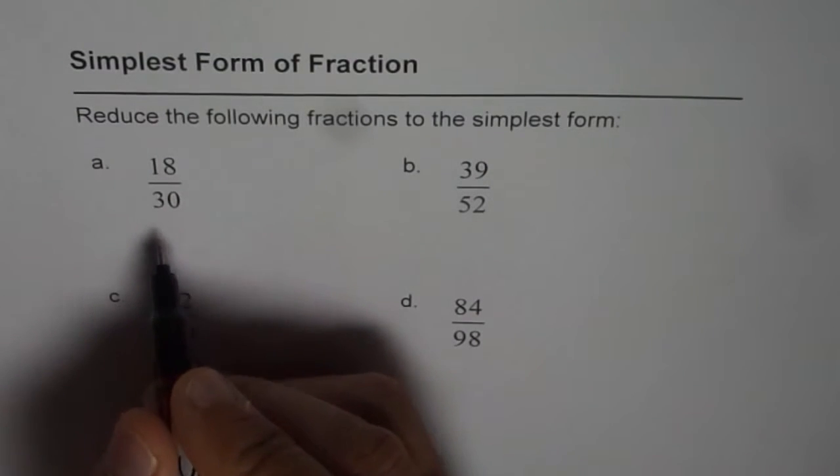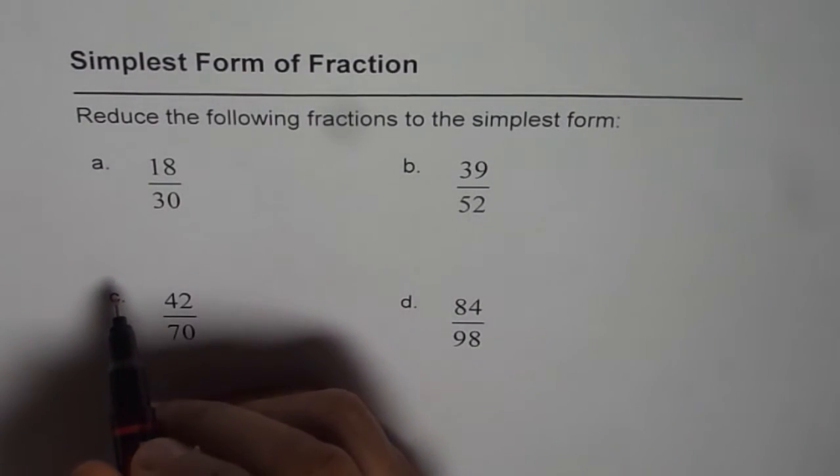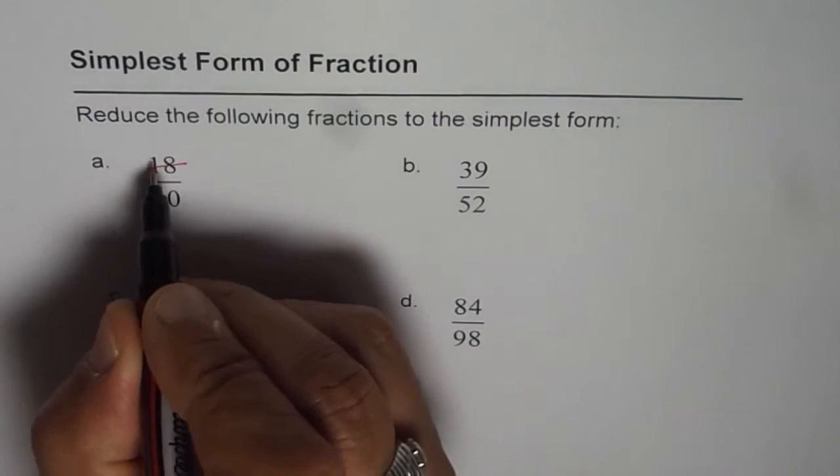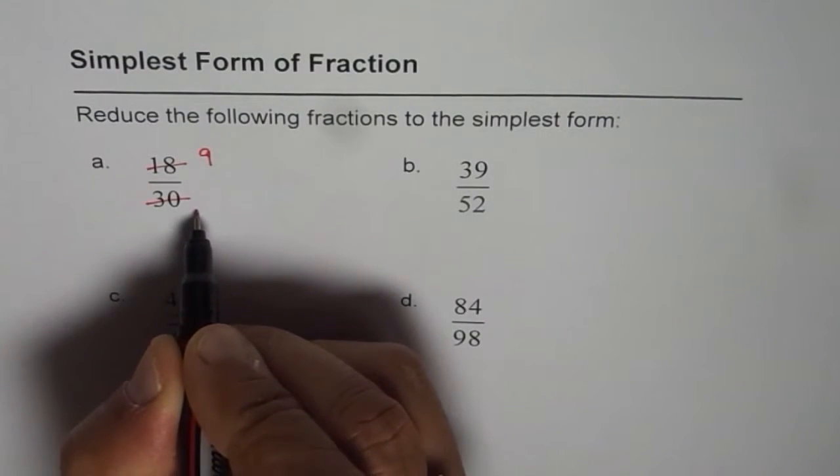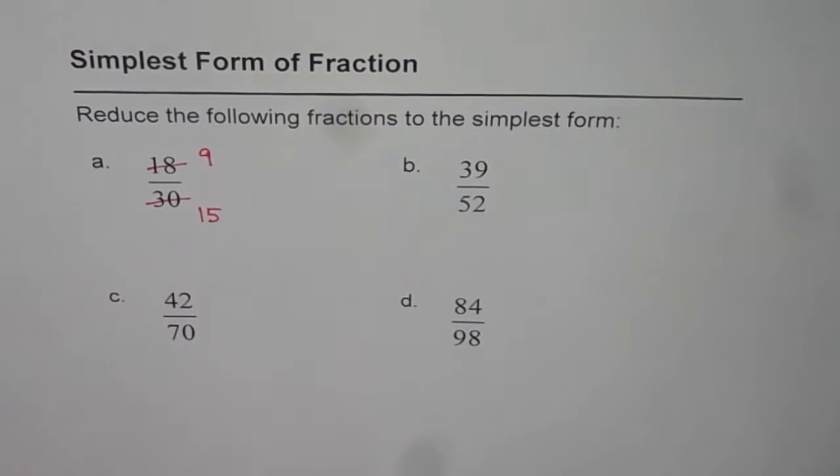But here we find both are even. So 2 is a common factor. So dividing by 2 what do we get? 18 divided by 2 is 9 and 30 divided by 2 is 15. So that is the first step.